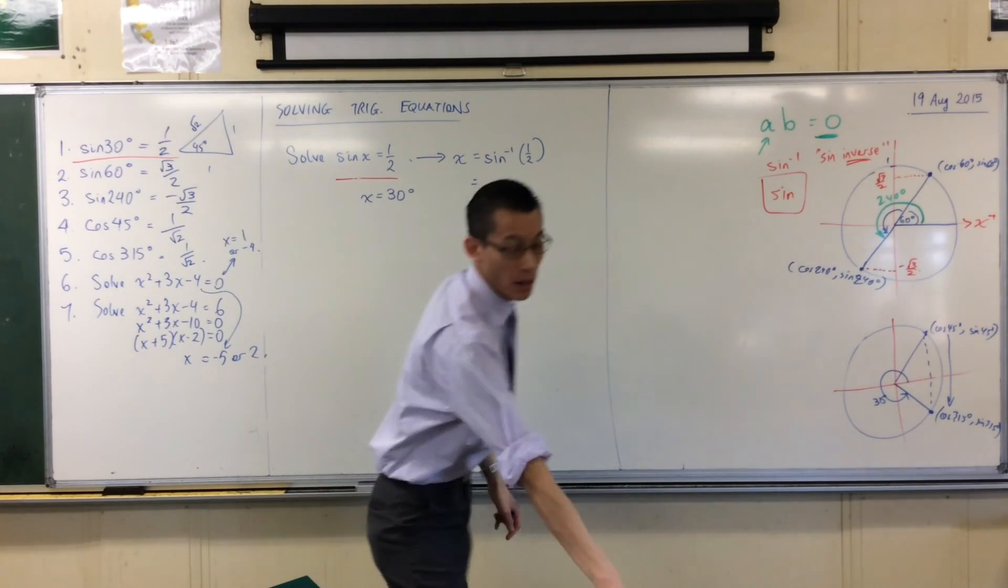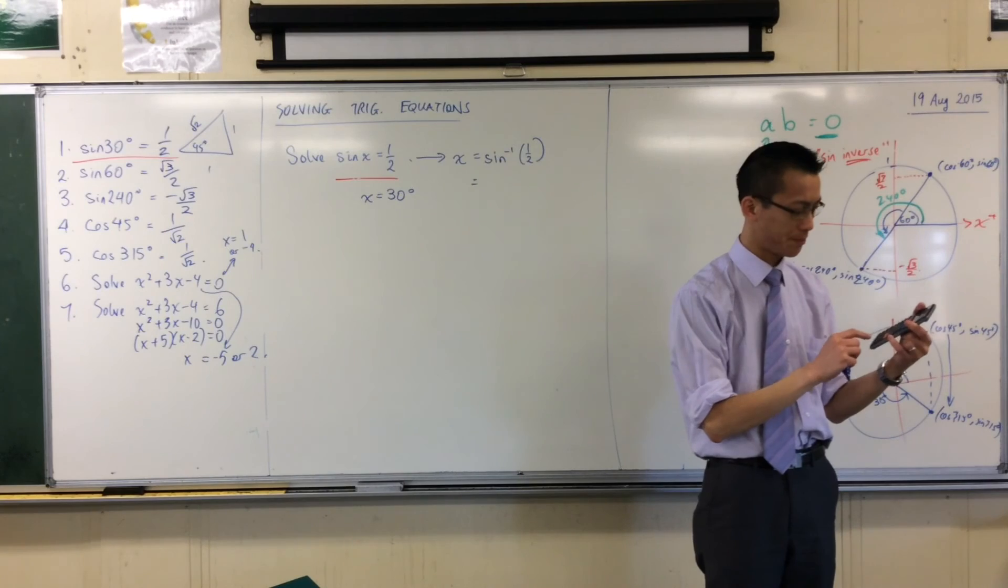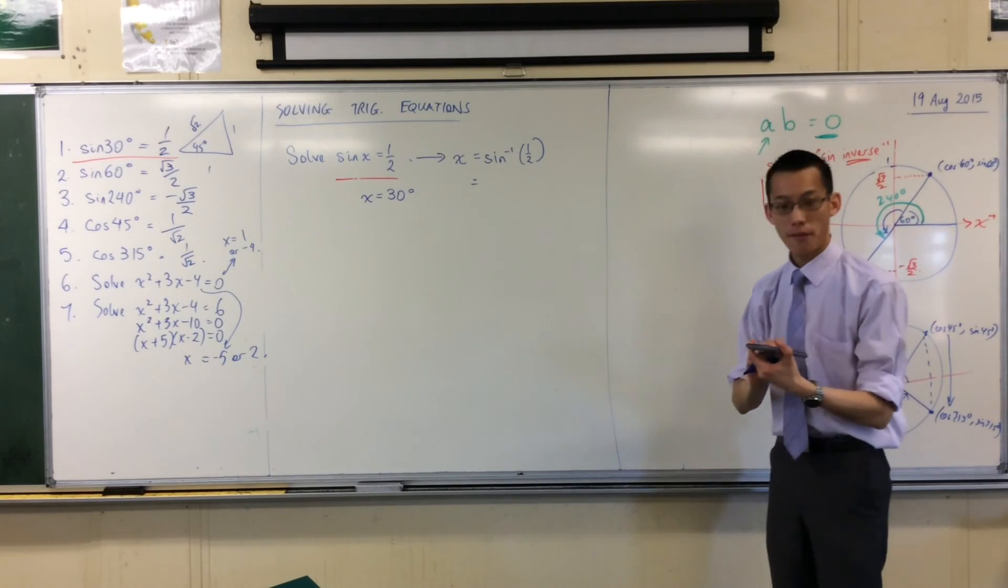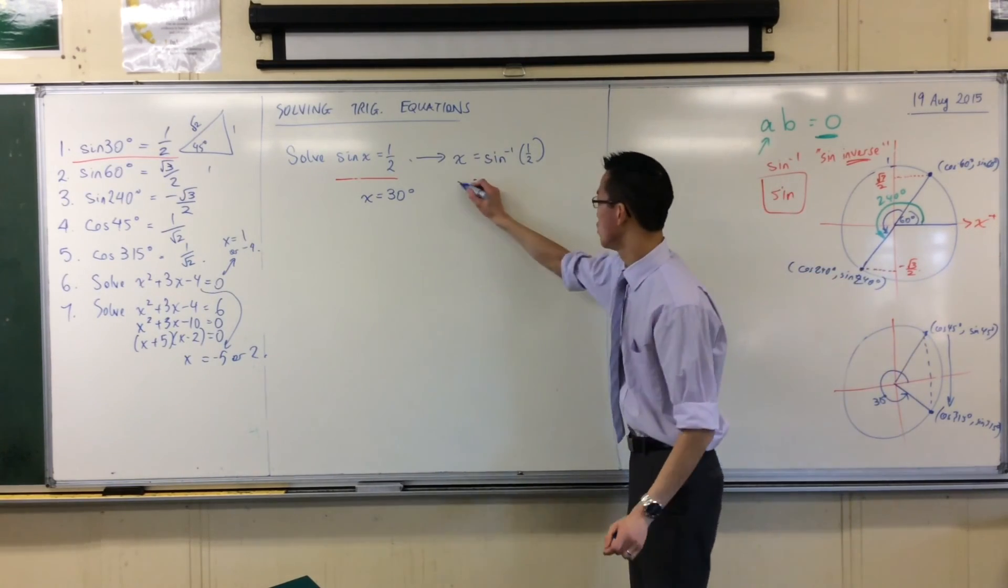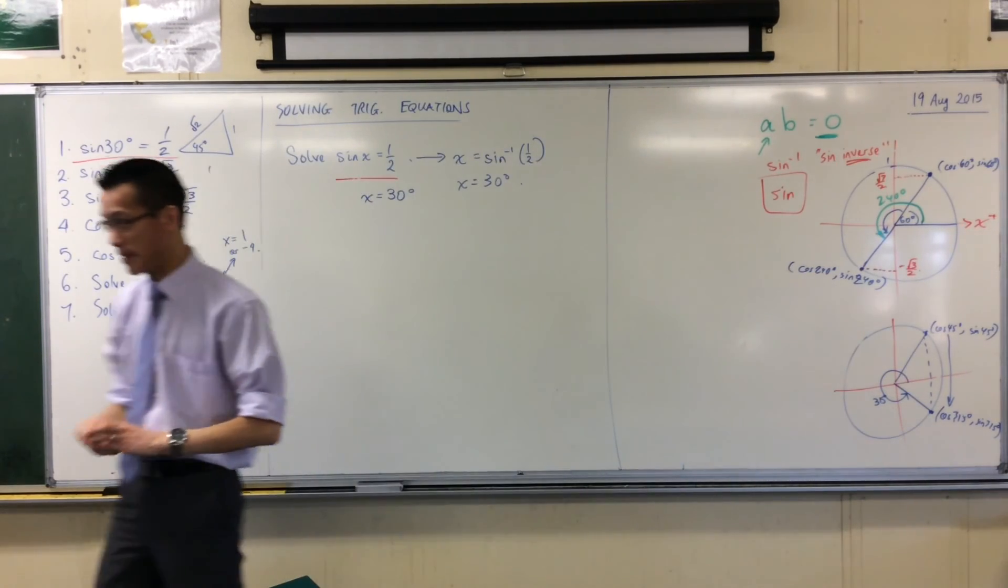Now go ahead, test it out, go to your calculator, press shift sine, and chuck 0.5 in there, and sure enough, it tells you, yeah, you were right the first time, X equals 30, no big deal.